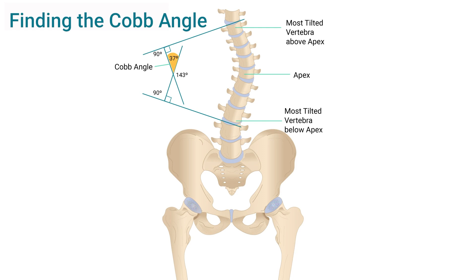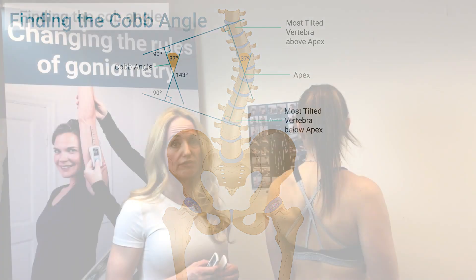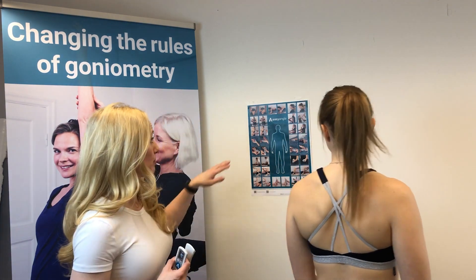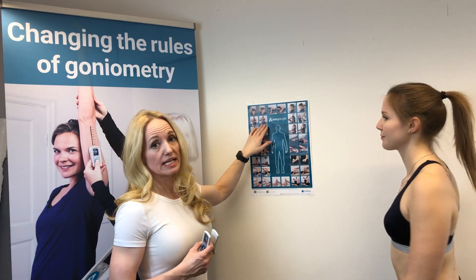What you can see from this diagram is that we can actually get the same Cobb angle — the same measurement — just by simply using this device on the spine, saving a lot of time and money for our customers. If you take a look at the measurement poster, you can see that this measurement is demonstrated on the top left side of the poster.